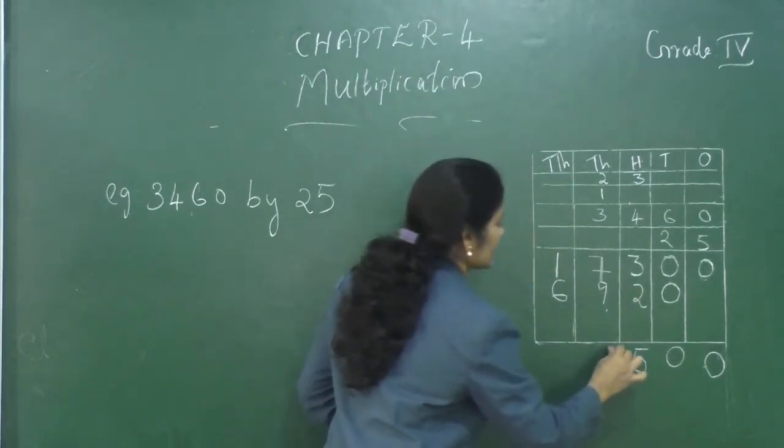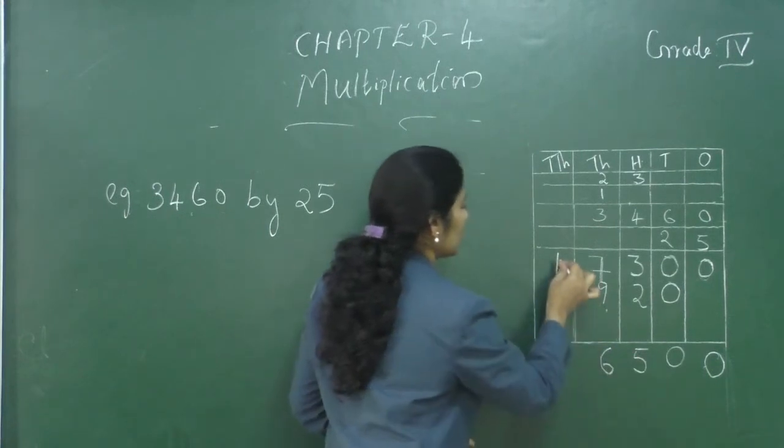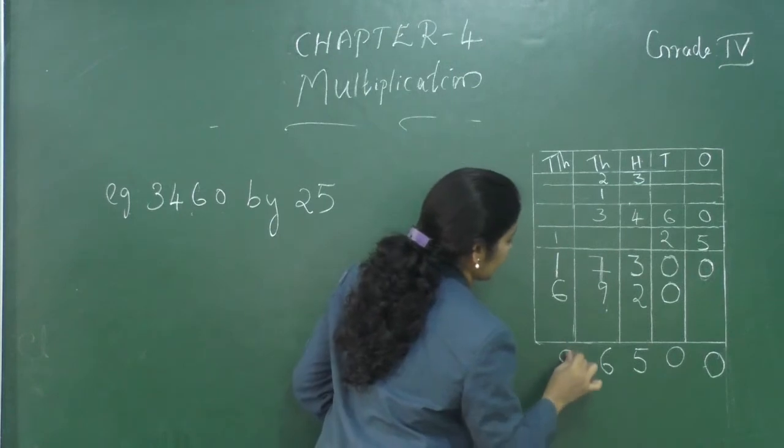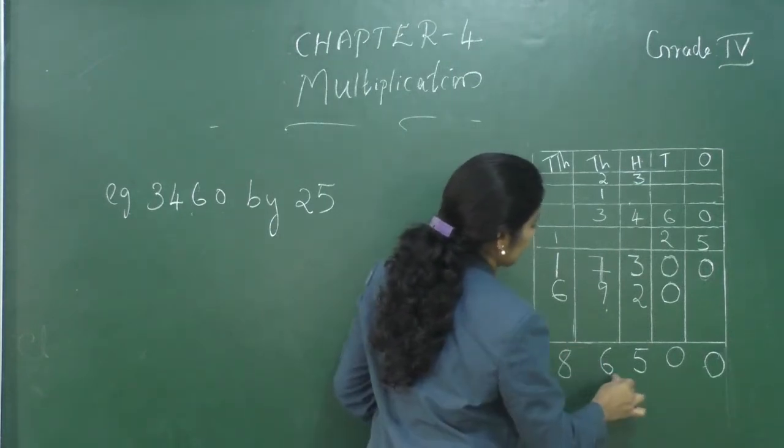Then, 7 plus 9? 16. 1 carry over. Then, 1 plus 1? 2. 2 plus 6? 8. We got our answer, 86,500.